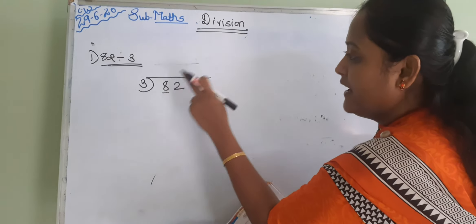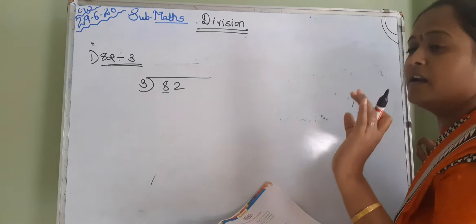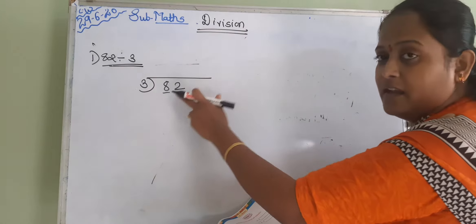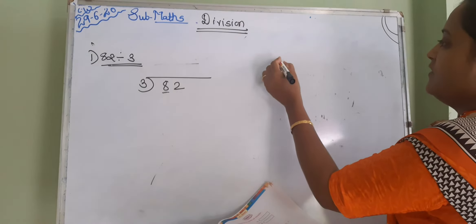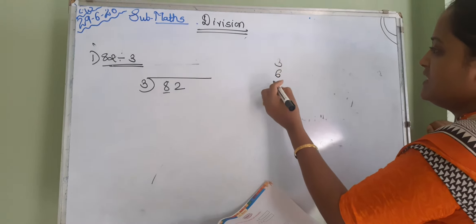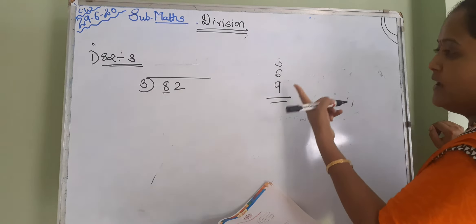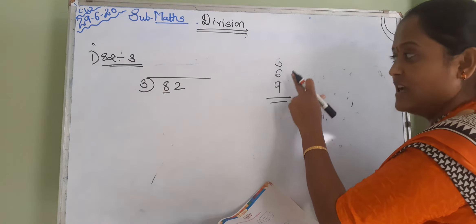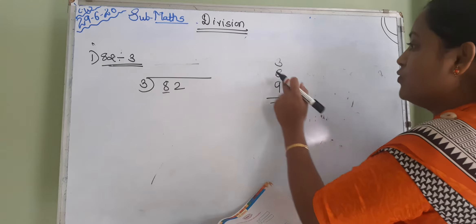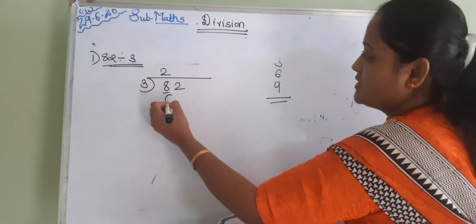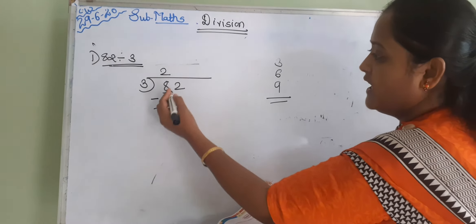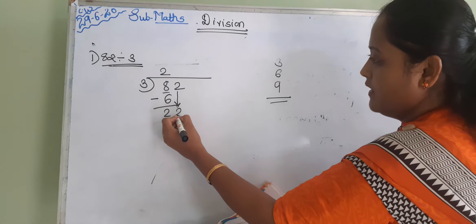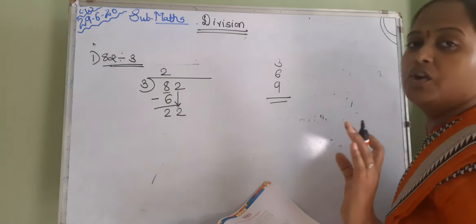तो हमें क्या करेंगे? हम find करेंगे कि 3 के table में 8 आता है क्या? अगर 8 नहीं आता है, so you suppose less than number of 8. 8 से less than number कौन सा आता है? वो देखना. 3 ones are 3, 3 twos are 6 and 3 threes are 9. 3 के table में 8 आता है क्या? No. But smaller than 8, which number occurs? It's 6. And which time 6? It's 3 twos are. So we just take 3 twos are 6. So subtract both number 8 minus 6, it's 2.